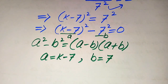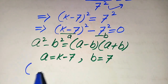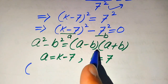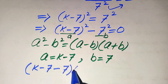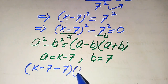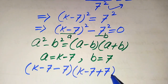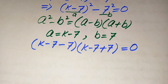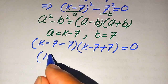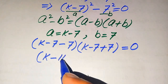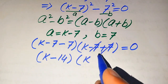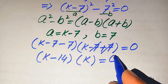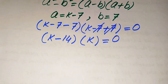After substituting these two values into the formula, it becomes: (k minus 7 minus 7)(k minus 7 plus 7) equals 0. Simplifying: k minus 14 times k equals 0, because the positive 7 and negative 7 cancel each other out, leaving just k.